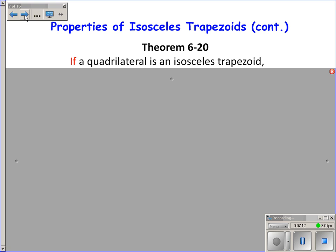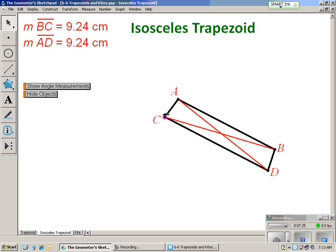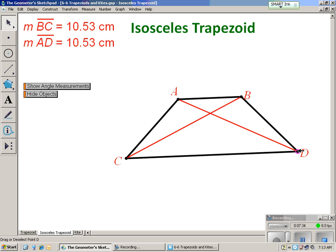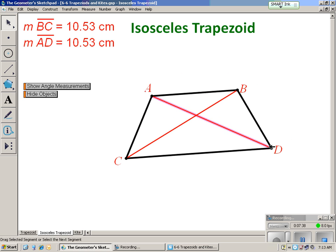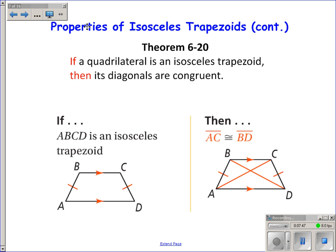The other property about isosceles trapezoids involves the diagonals. Drawing in the diagonals and measuring them, you'll notice they always have the same measure. The theorem states: if a quadrilateral is an isosceles trapezoid, then its diagonals are congruent. We could prove this using triangle congruence theorems, but we won't here. Remember, base angles being congruent and diagonals being congruent apply only to isosceles trapezoids, not to any trapezoid.